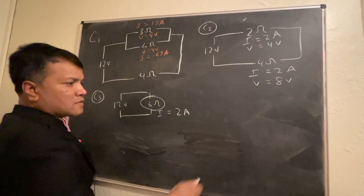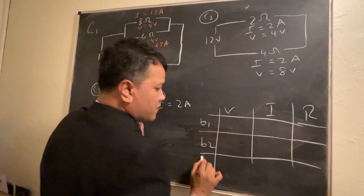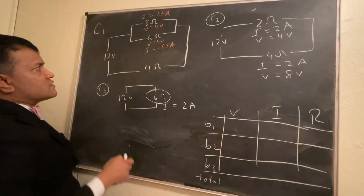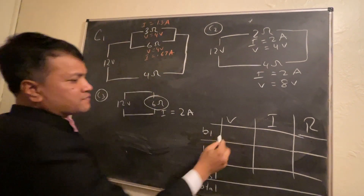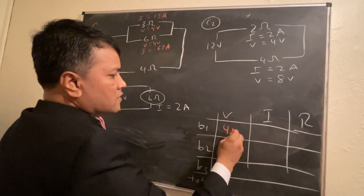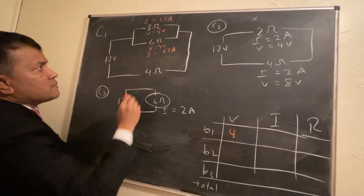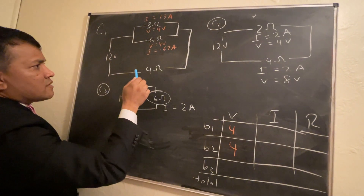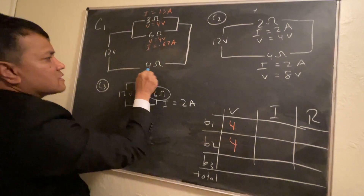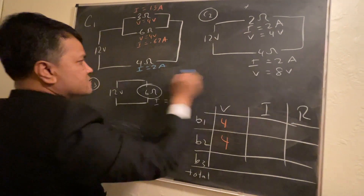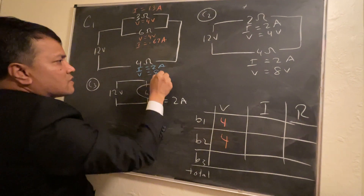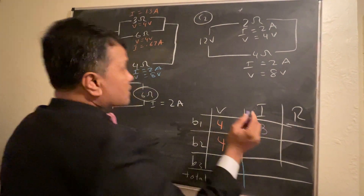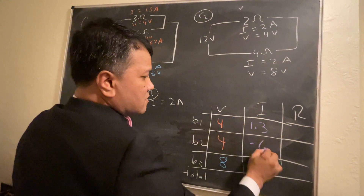Let's summarize the voltage drops. Ball number one voltage is 4 volts, ball number two voltage is 4 volts, ball number three voltage is 8 volts. The current through the main circuit is 2 amps. Through the three-ohm branch it's 1.3 amps, and through the six-ohm branch it's 0.67 amps.